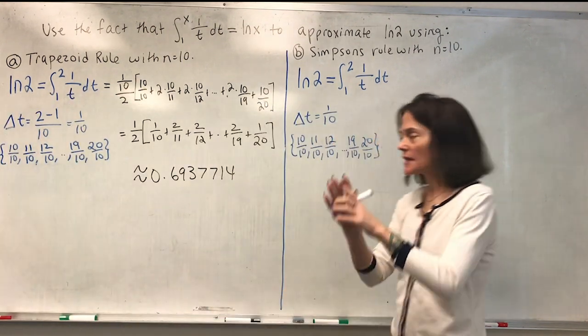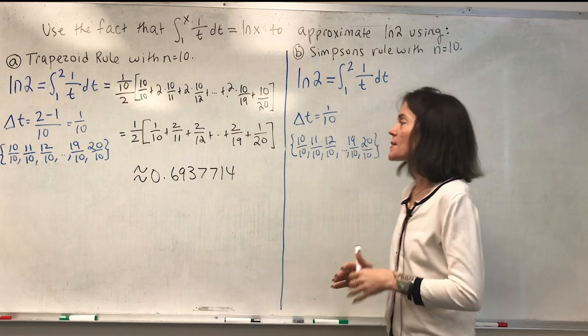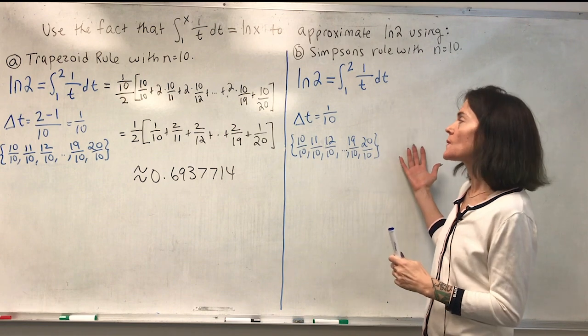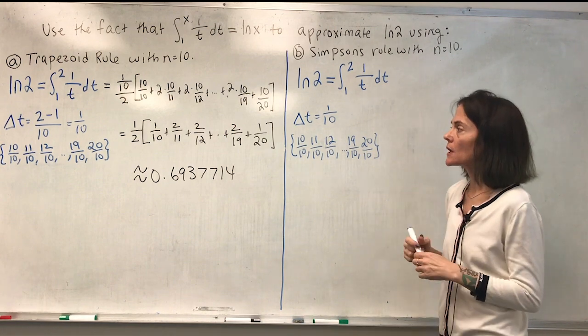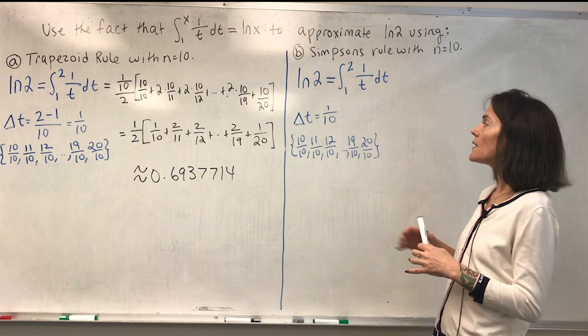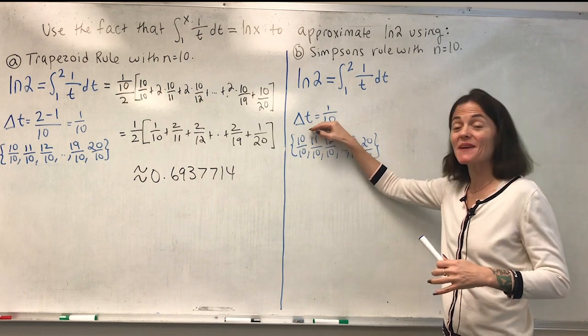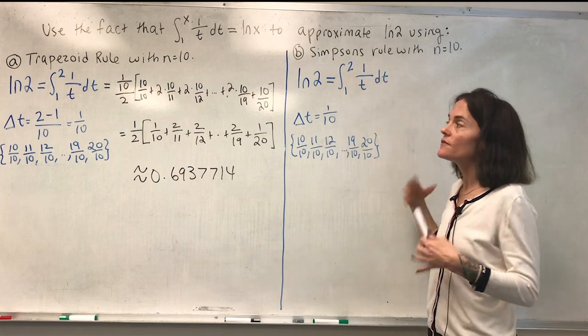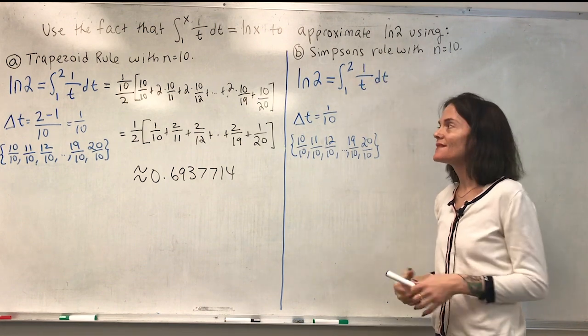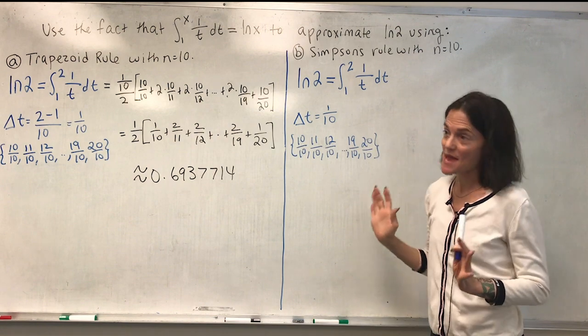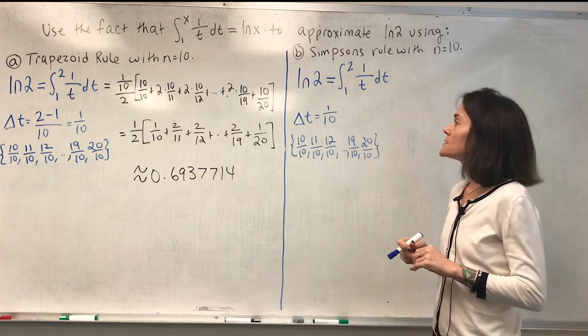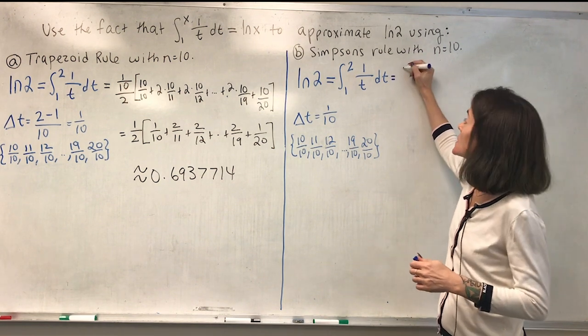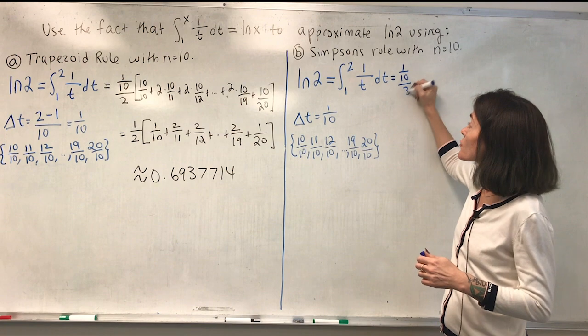Now let's do this one. What changes? Well, we have as I mentioned, we have the same delta t and the same partition, and the same function, the same interval. Everything is the same except what we are using to approximate. The formula is slightly different. So we have delta t over 3.